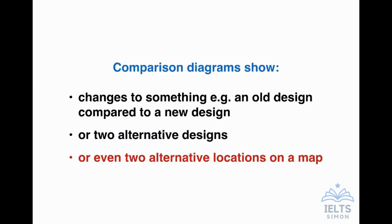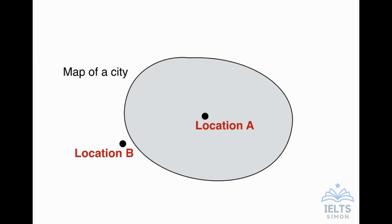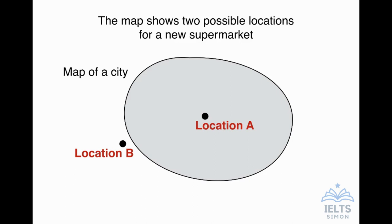The final type of comparison diagram is what I call two alternative locations on a map. There's a good question in one of the official Cambridge IELTS books. You see the map of a town or city with two locations, location A and location B. The question is: 'The map shows two possible locations for a new supermarket.' Your job is to compare these two possible locations — A in the centre of the town and B outside the city. I call this an alternative locations map.